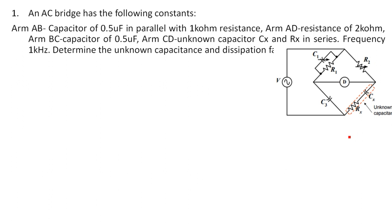In bridge problems, questions are typically given with the names of the arms: AB consisting of certain components, BC consisting of others, and so on. In this AC bridge problem, arm AB is a capacitor of 0.5 microfarad in parallel with a 1 kilo ohm resistor. So C1 is 0.5 microfarad and R1 is 1 kilo ohm.